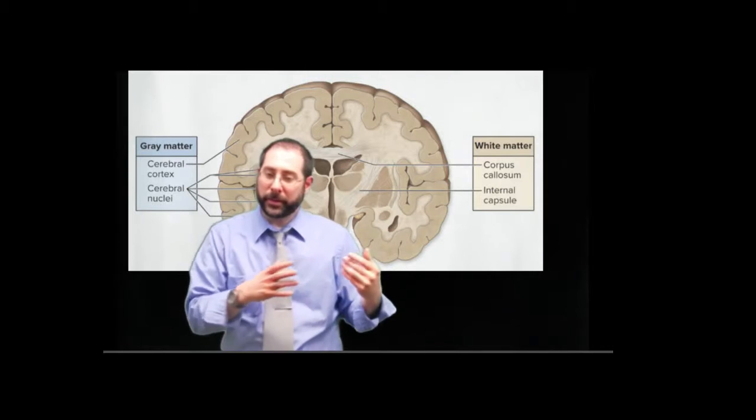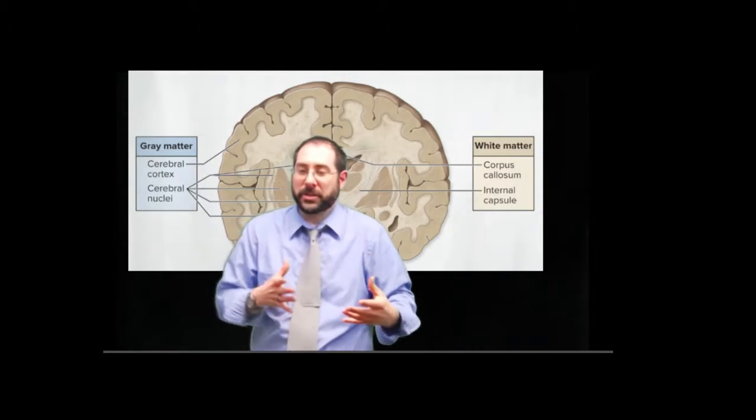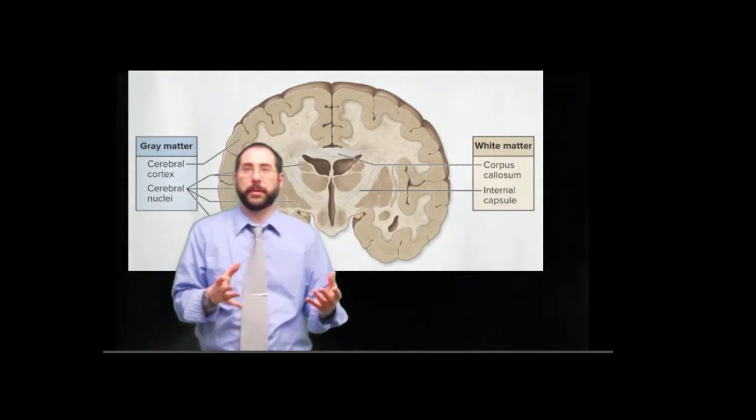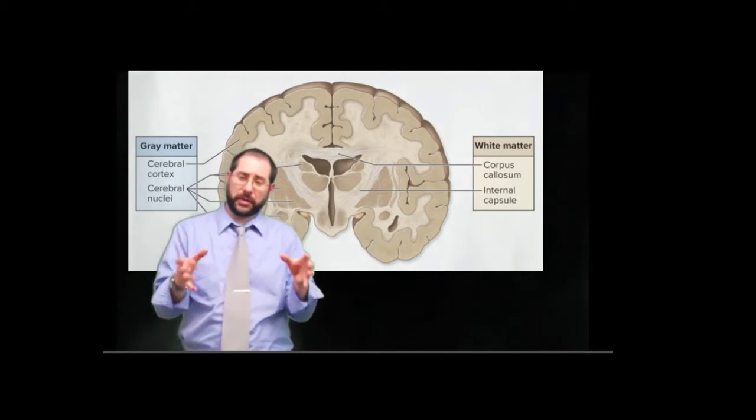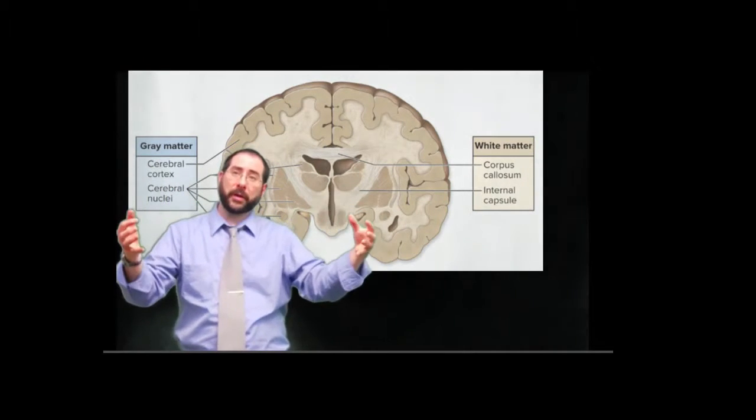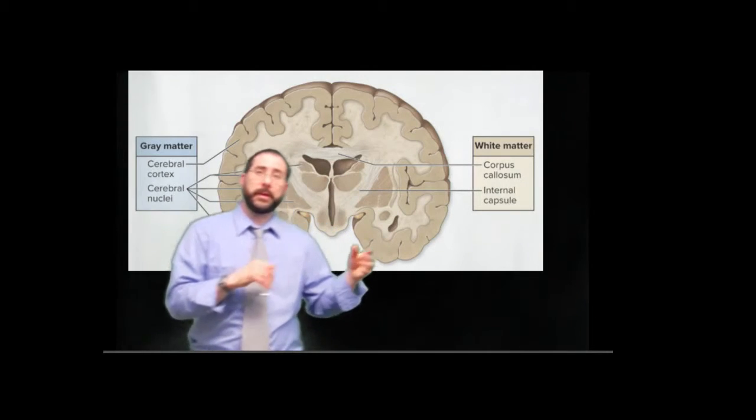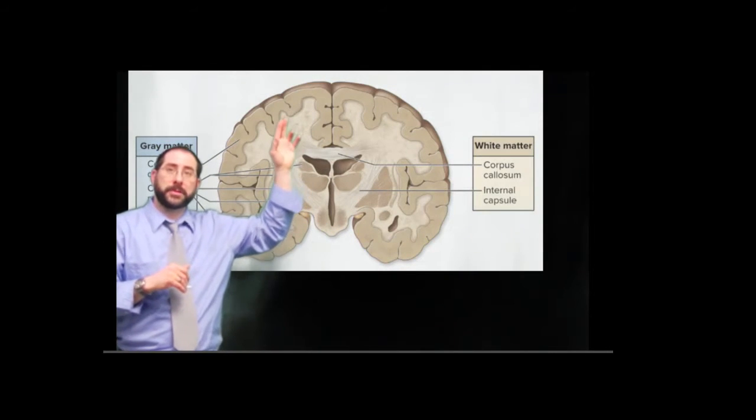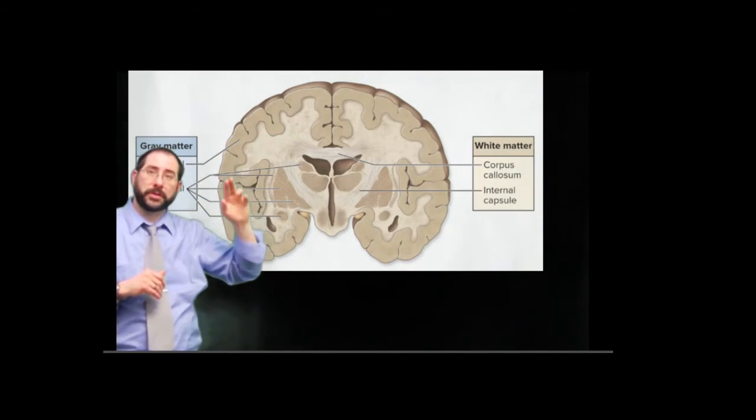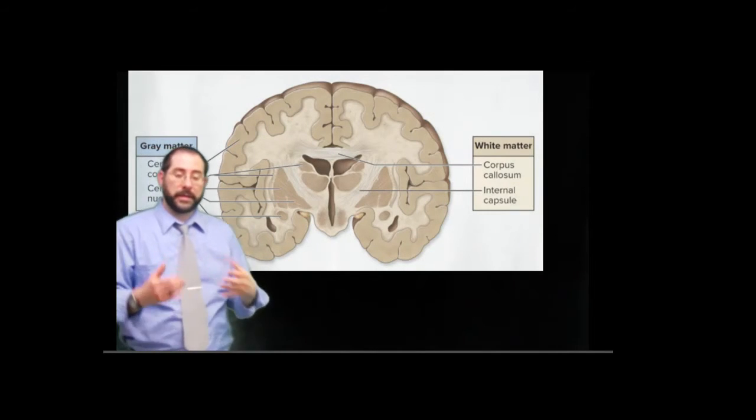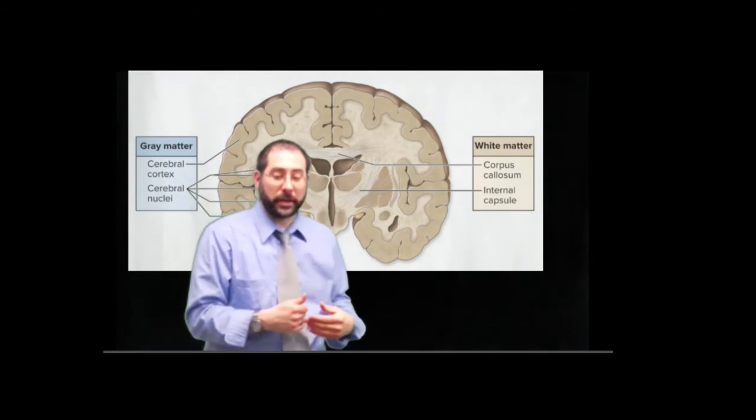Our white matter up there is just the connections between the two hemispheres of our cerebrum, whereas the gray matter is the functional part. It's interesting that it's all on the outside. You can see up here all that gray matter like I was talking about, and this is all our functional tissue, and that's what we're going to be talking about.